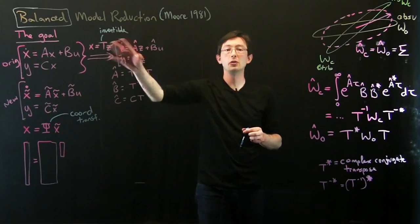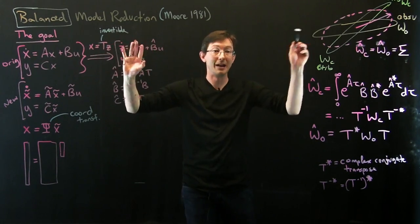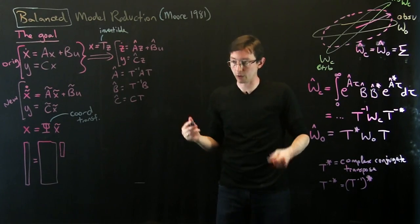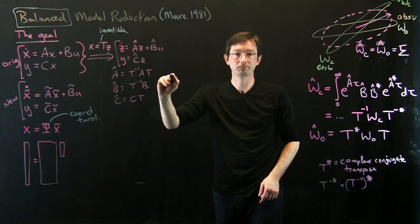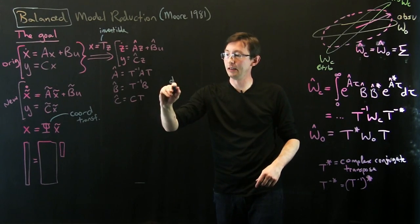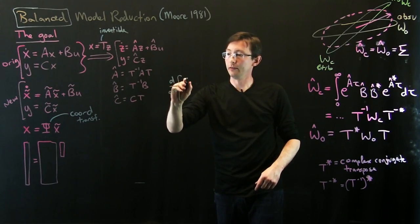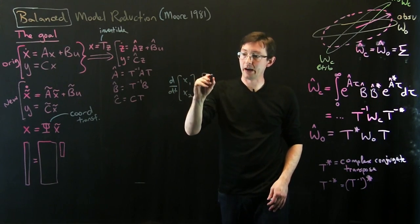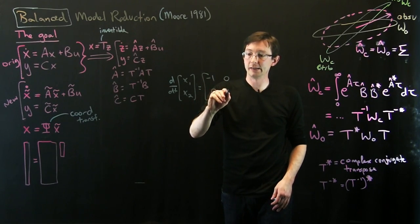As a really simple example, I just want to show you kind of what we would be doing here to balance these. Let's start with a really simple example. In x-coordinates, we're going to have d/dt of x1, x2 equals, and I'm going to make this minus 1, 0, 0, minus 10.